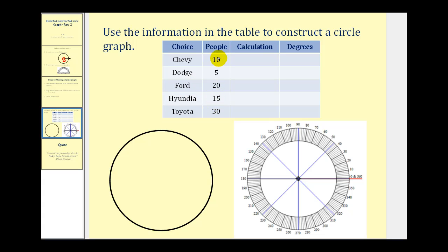The first thing we need to do is determine how many people were surveyed. So if we find the sum of this column, we'll have the total number of people that were surveyed. If we do that, we're going to get 80.